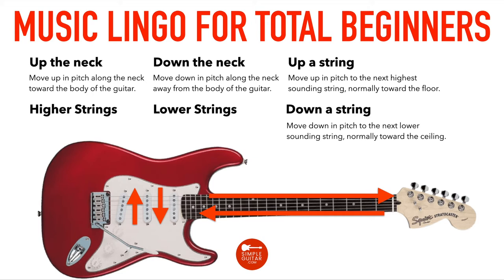Your higher strings on the guitar are the thinner, higher-sounding strings, and your lower strings are the thicker, lower-sounding strings. All this stuff is backwards from what you'd think, but all of it relates to pitch — how high or low the pitch sounds. As we move up, we're moving up in pitch; as we move down, we're moving down in pitch. Everything with guitar and music is related to pitch.